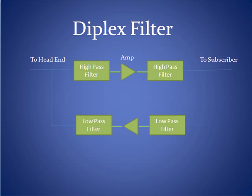The diplex filter isolates frequencies in both directions, allowing higher frequencies to travel towards the subscriber and lower frequencies at the low end of the spectrum to be taken from the subscriber and transmitted back to the head end.